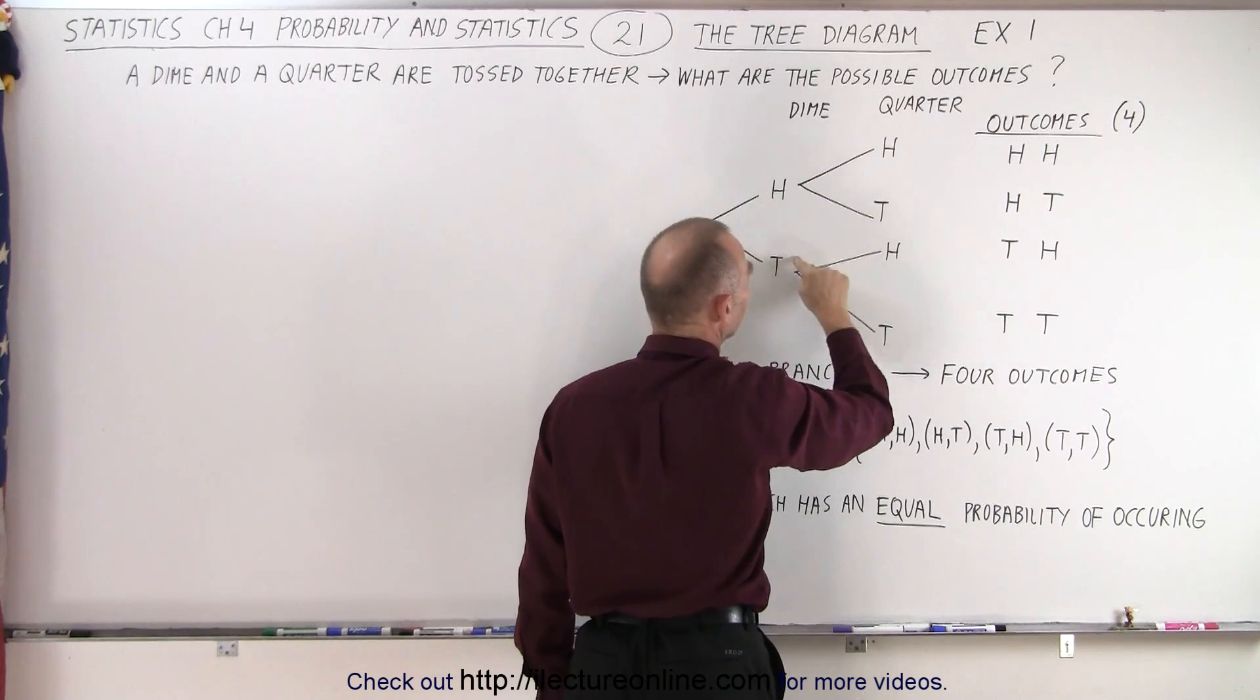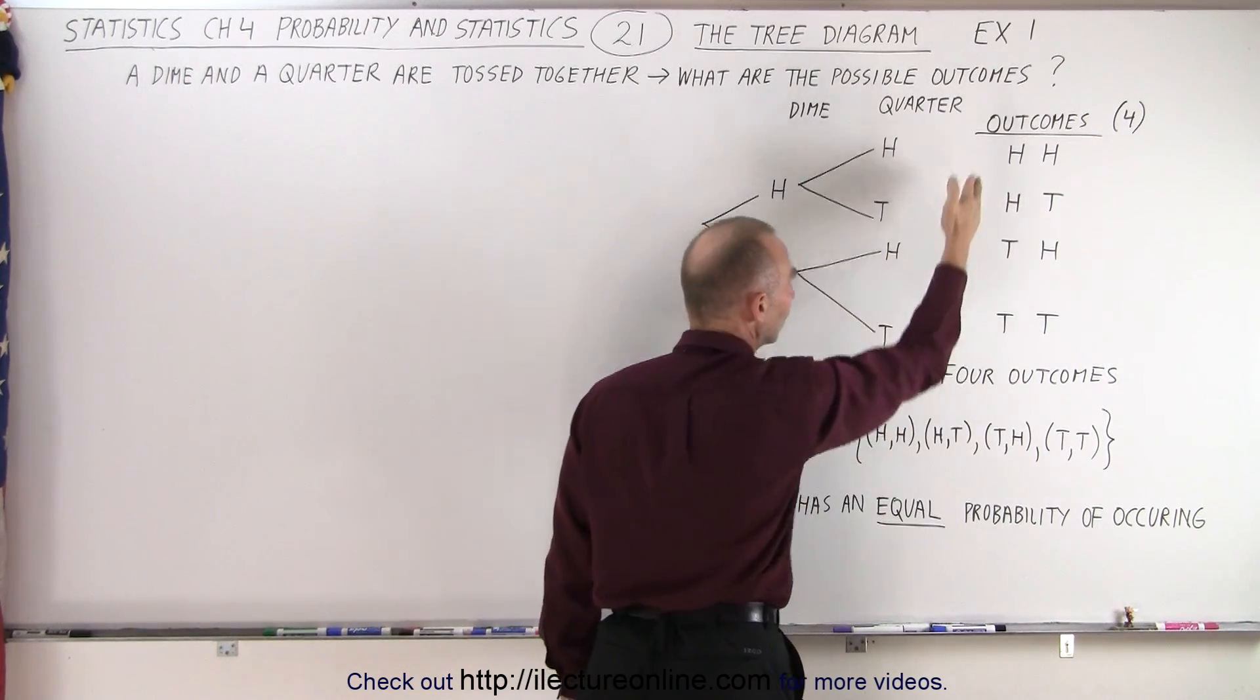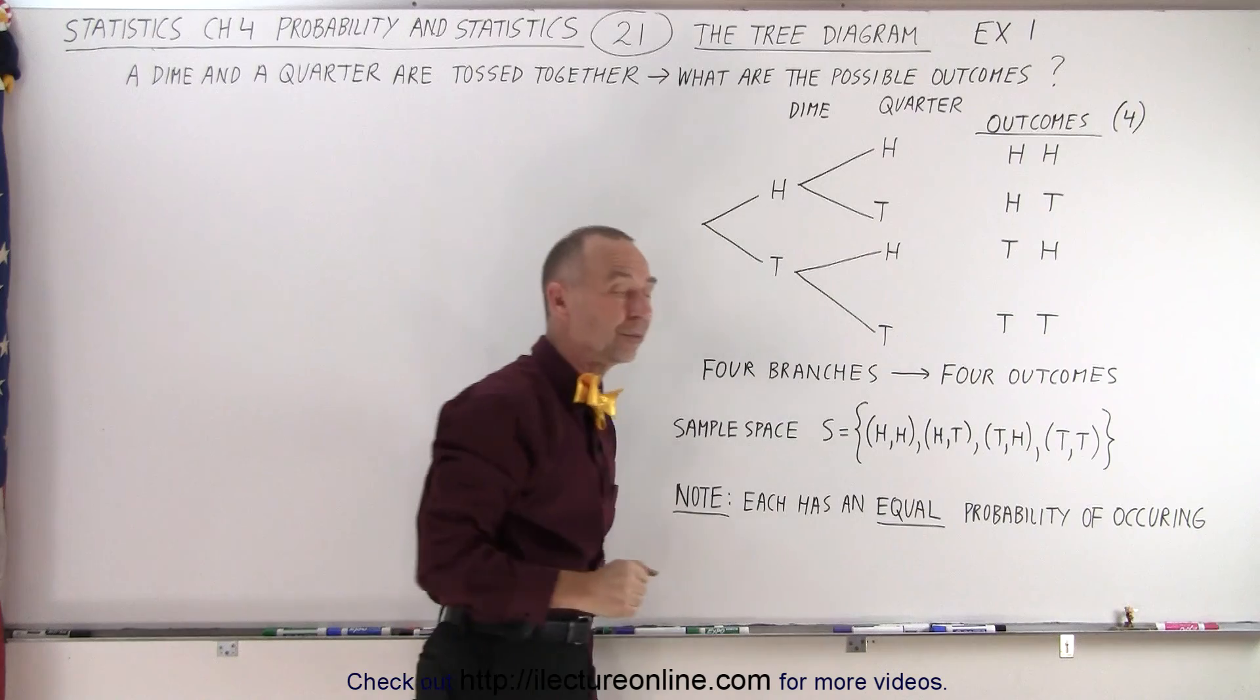Head-head, head-tail, tail-head, and tail-tail. So these are the four possible outcomes.